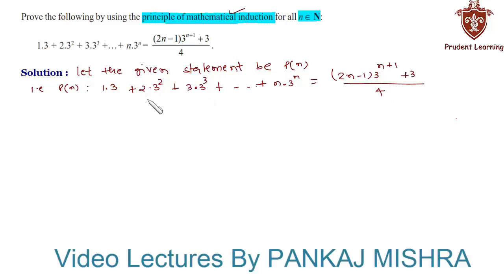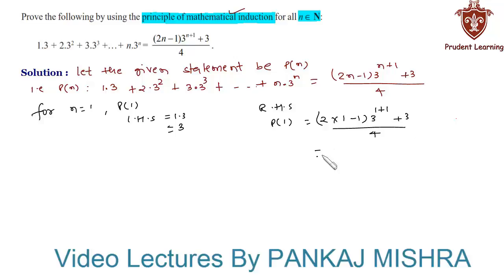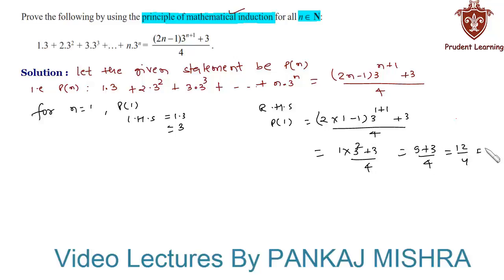In our very first step we will verify whether the given equation holds true or not for n = 1. For n = 1, on the left hand side P(1) = 1·3 = 3, and on the right hand side P(1) = (2·1 − 1)·3^(1+1) + 3, divided by 4, which equals 1·3² + 3 over 4, which is 9 + 3 over 4 = 12/4 = 3.